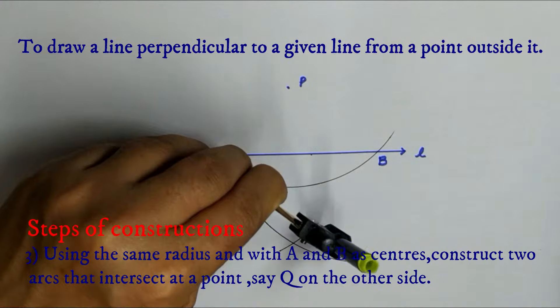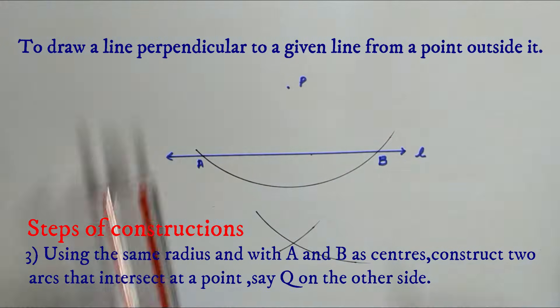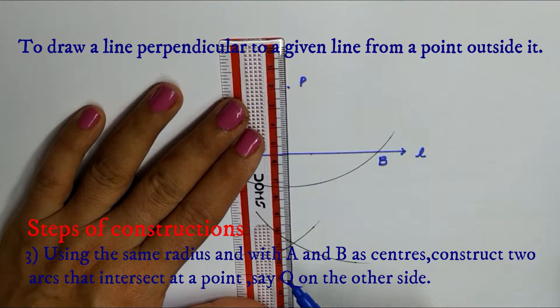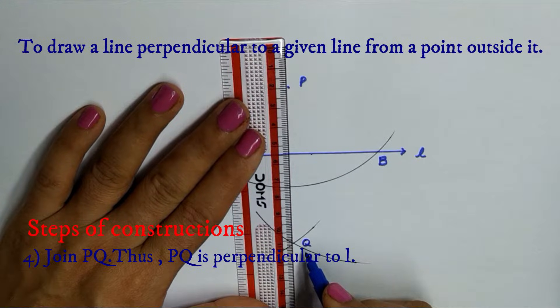Construct two arcs that intersect at a point. Let us name this point Q which is on the other side of the line L.